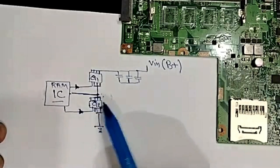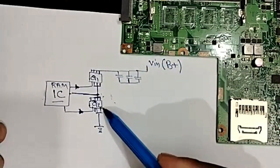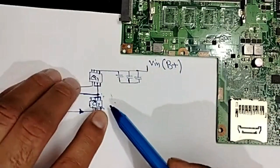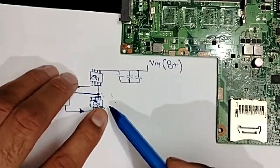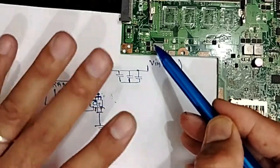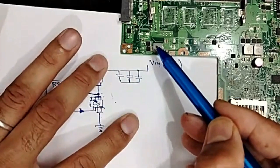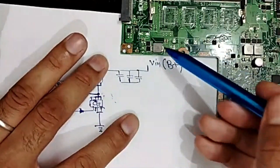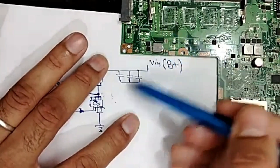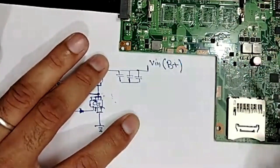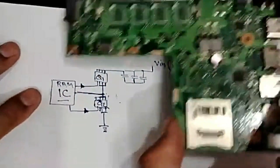We can go from here to here or from here to here. If we have a schematic, we can use it to understand the circuit. If we don't have a schematic, no problem, no worries — I can even draw the schematic for any circuit here.